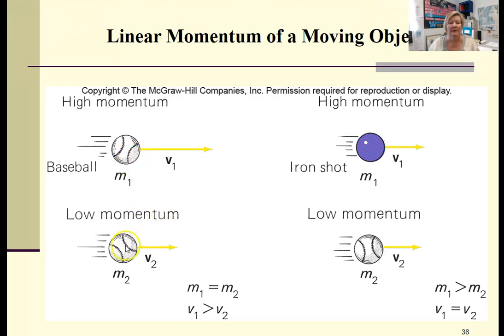So the baseball in this picture, the mass of the ball would be the same. Obviously here it's going faster, higher velocity than this, so the momentum here would be greater because the velocity is greater.